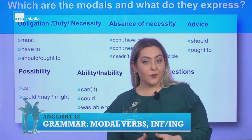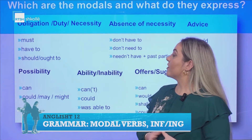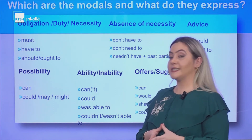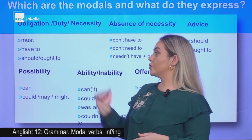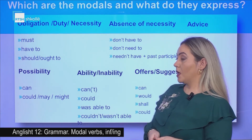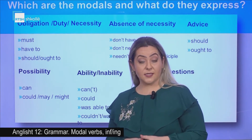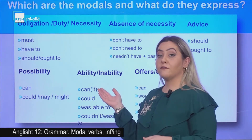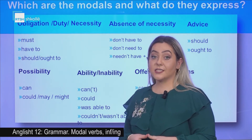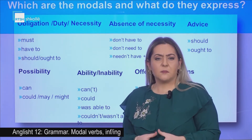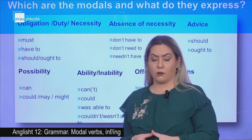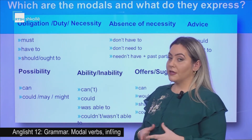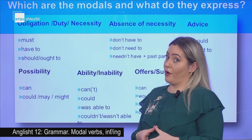Now let's learn which are the modal verbs. Modal verbs that express obligation, duty, and necessity: must, have to, should, ought to. If you use 'must', the obligation comes from inner you. If you use 'have to', the obligation is outer — someone is making you do something, or maybe a situation. If you use 'should' or 'ought to', it is not as strong as 'must' or 'have to'.